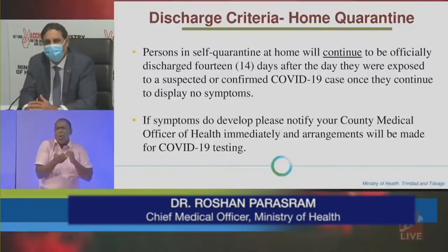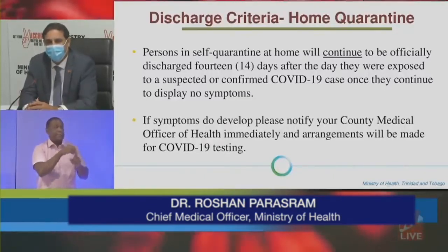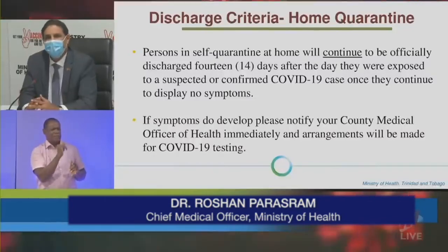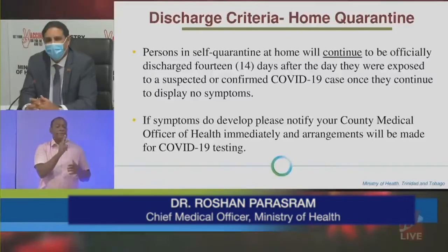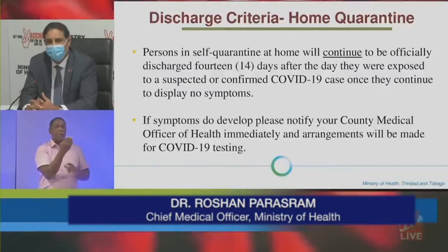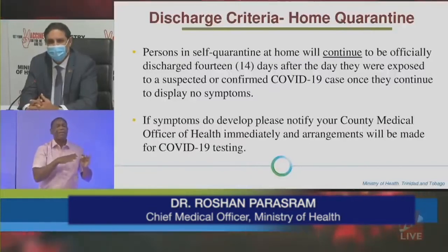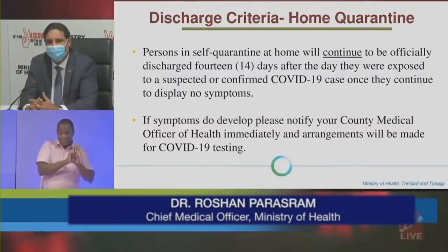Our discharge criteria for home quarantine — just to remind: quarantine is for persons who would have been exposed without symptoms, those are primary contacts, secondary contacts and the like. Persons in self-quarantine at home will continue to be officially discharged 14 days after the day they were exposed to a suspected or confirmed case, once they continue to display no symptoms.